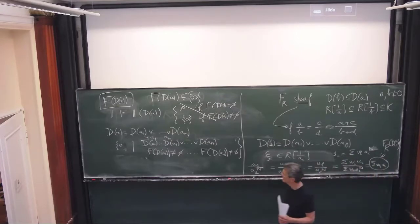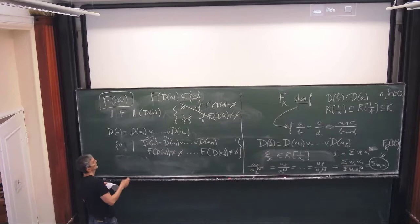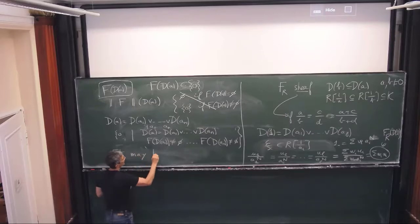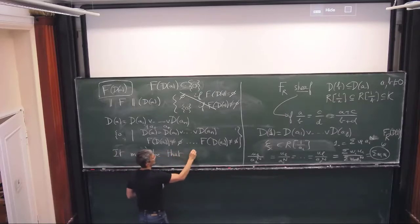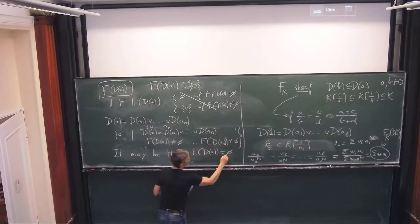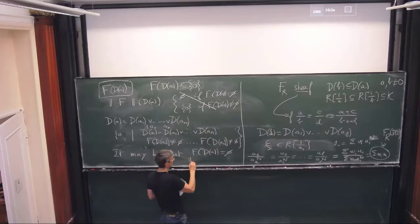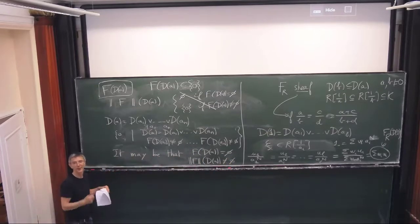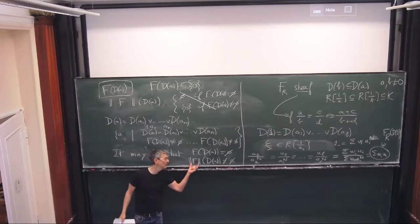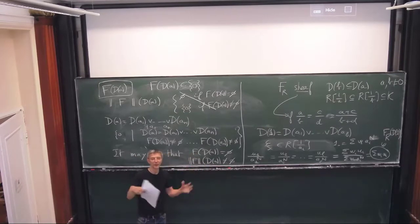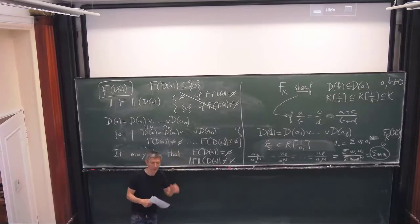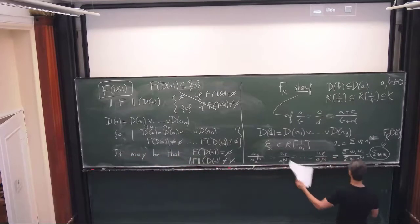It may be that f(D(a)) is not empty, but the propositional truncation of f is not empty. That's counterintuitive because intuitively the truncation is supposed to be smaller. This is a counterintuitive phenomenon — you can write down an example of this.